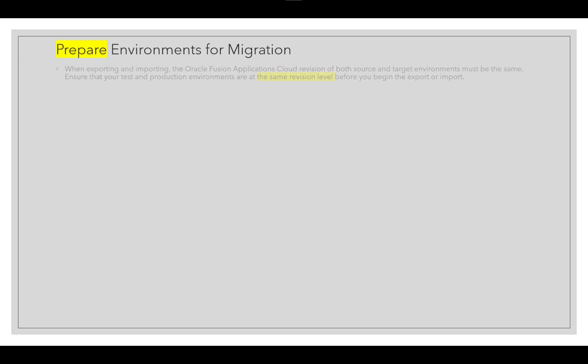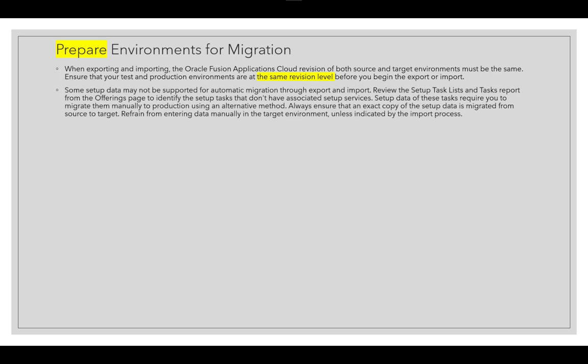To prepare environments for migration — where the source is the test environment and the target is production — first ensure that the revision of both source and target environments must be at the same revision level. Some setup data may not be supported for automatic migration through export and import. Review the setup task list and task report from the offering page to identify setup tasks that don't have associated setup services. Setup data for those tasks requires manual migration to production using an alternative method.